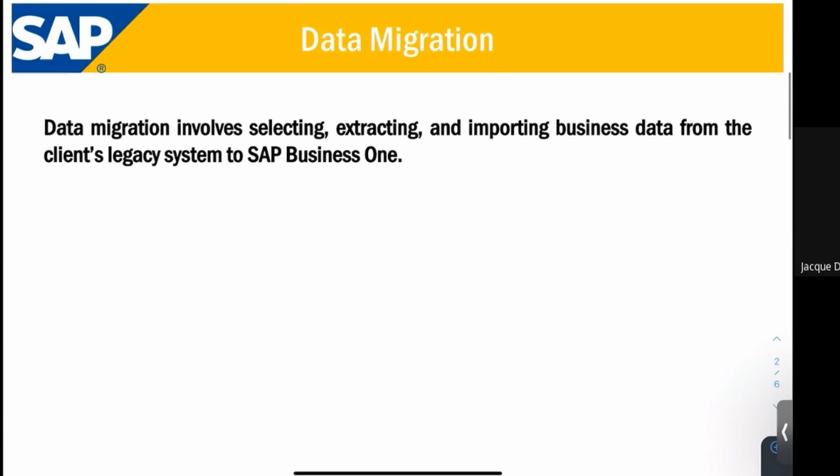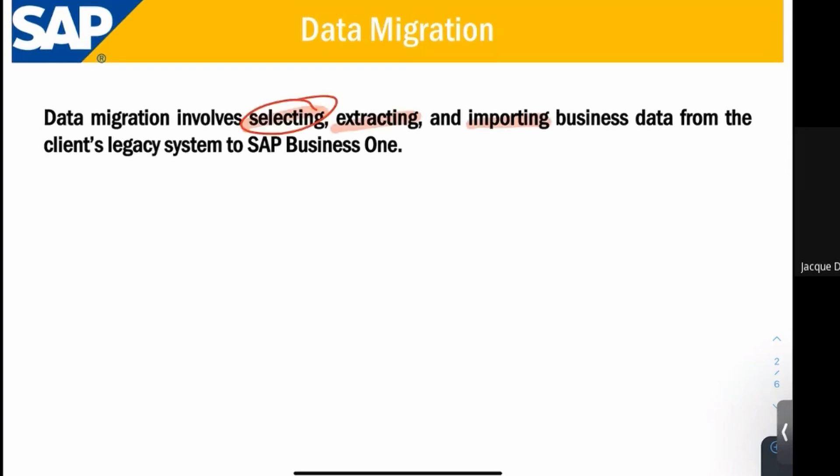Data migration involves selecting, extracting, and importing business data from the client's legacy system to SAP Business One. There are three processes involved in your data migration. First is the selection. Second is the extraction. Third is importing.